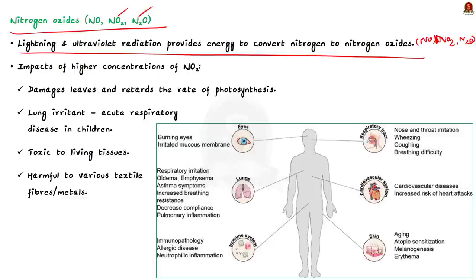For example, higher concentrations of NO2 damages the leaves of plants and it also retards the rate of photosynthesis in plants. The nitrogen dioxide, that is NO2, is also a lung irritant. Therefore, it affects human beings and it leads to acute respiratory disease in children. And this NO2 is toxic to living tissues also. And it is also harmful to various textile fibers and metals.